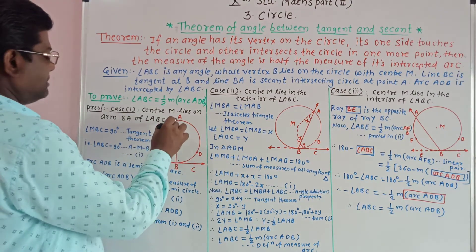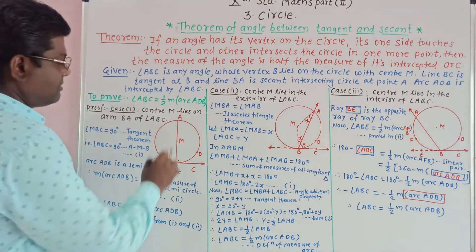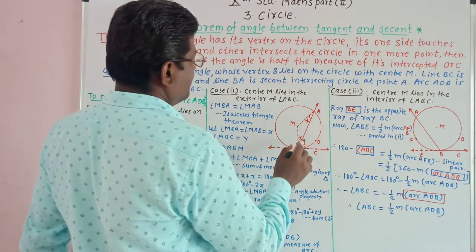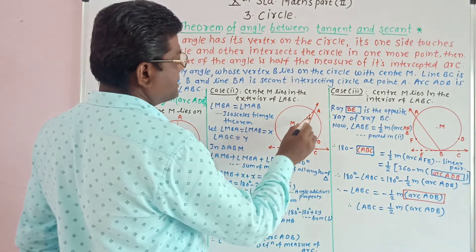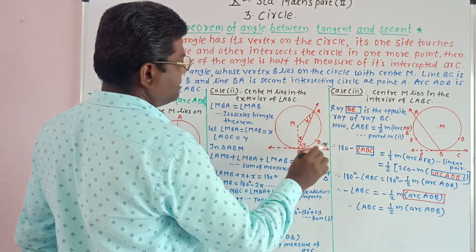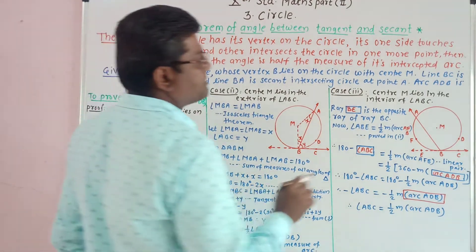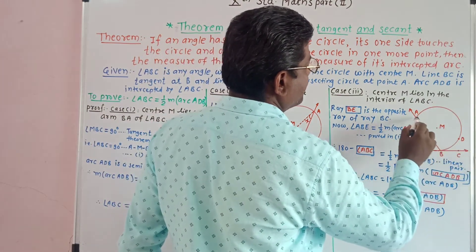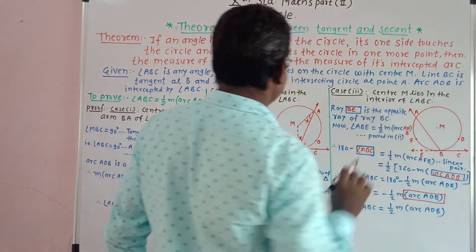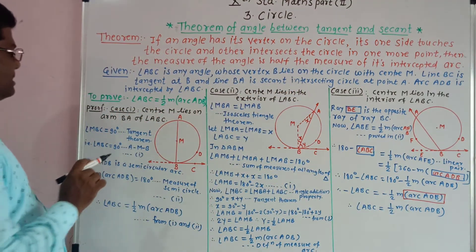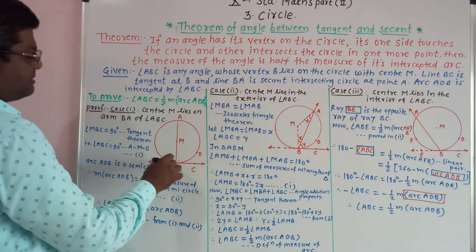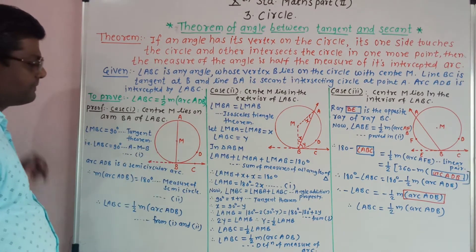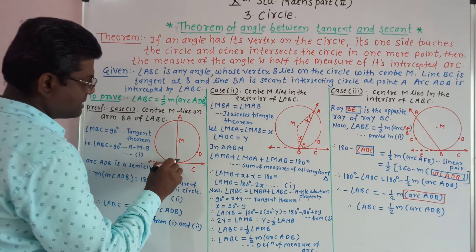There are three cases: Case 1 — center M lies on the arm of angle ABC. Case 2 — center M lies in the exterior of angle ABC. Case 3 — center M lies in the interior of angle ABC.